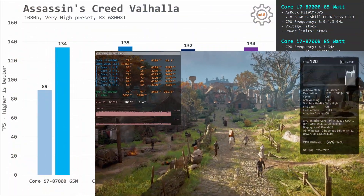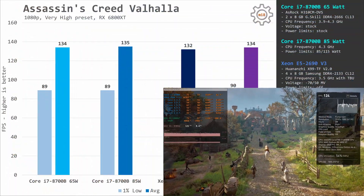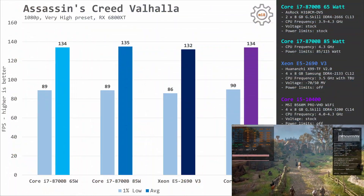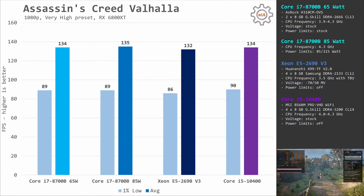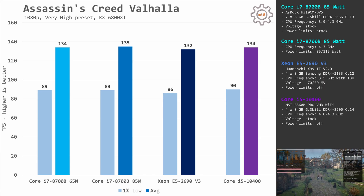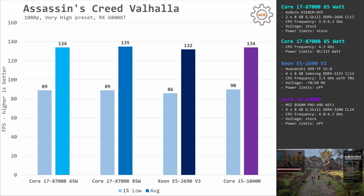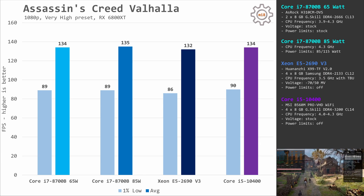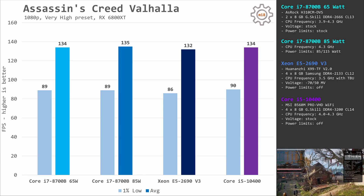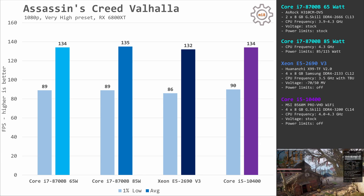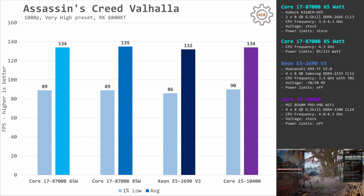Assassin's Creed Valhalla is a much newer and much better optimized title. Here, all four configurations are demonstrating almost identical performance — in all cases we have about 90 fps 1% low and about 135 fps on average.